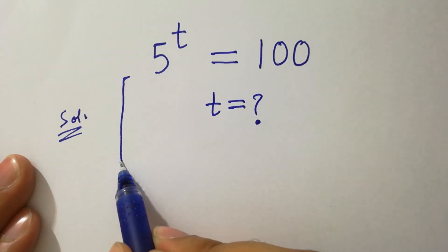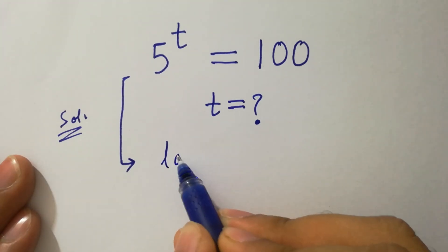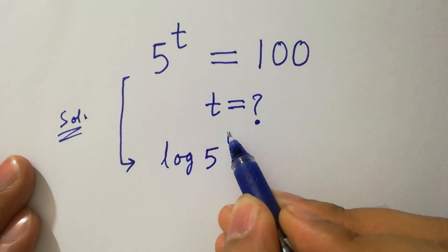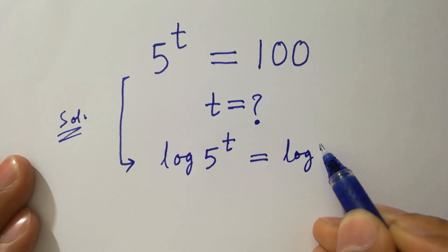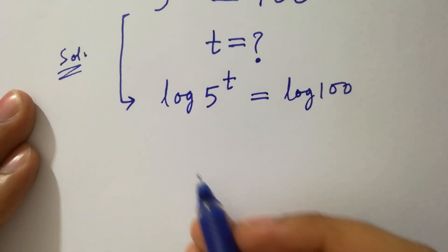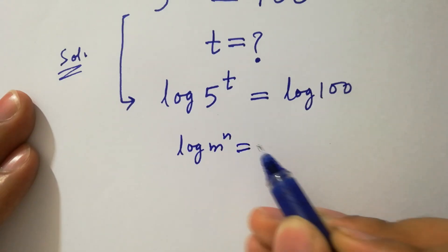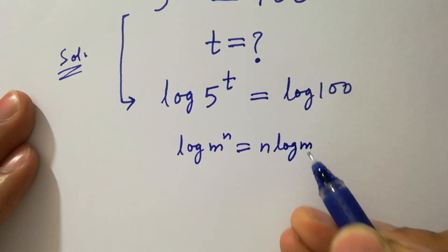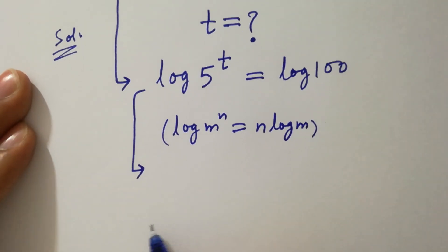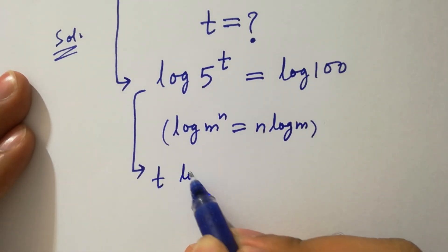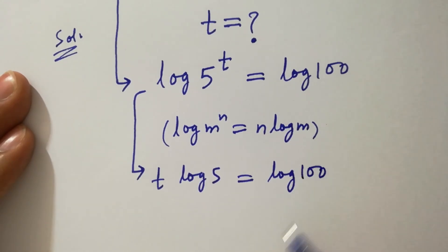To solve this problem, take log on both sides: log of 5 to the power t equals log 100. Since log m to the power n equals n log m, it will be t log 5 equals log 100.